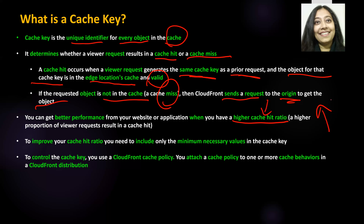The higher the number of cache hits, the better your application performance. How do you improve your cache hit ratio? The easiest way is to include only the minimum necessary values as part of your cache key. The fewer values, the better the cache hit ratio, and the better your application performance.